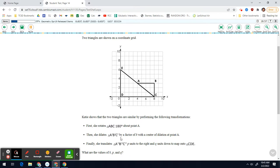Katie shows that the two triangles are similar by performing the following transformations. She first rotates triangle ABC 180 degrees about point A. Then she dilates that triangle by a scale factor of K, center of dilation at A. And then she translates the next triangle P units right and Q units down to get CDE.